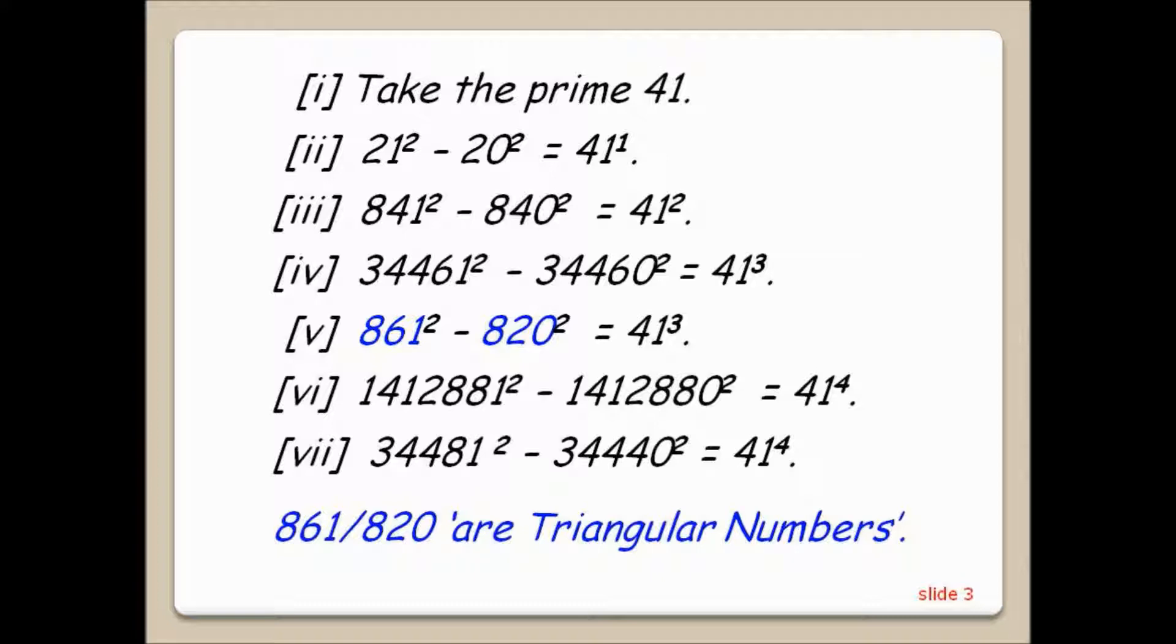34461 squared minus 3460 squared equals 41 cubed. 861 squared minus 820 squared equals 41 cubed.